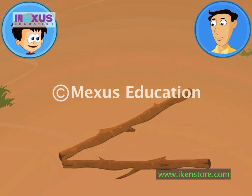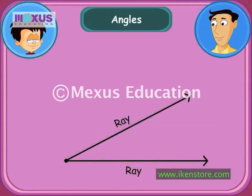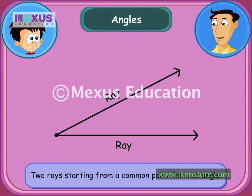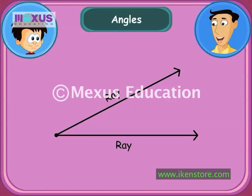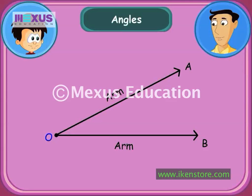Hey, so that's how we get an angle. You got it right, JC. Two rays starting from a common point form an angle. Let us name these two rays as OA and OB. The two rays are called the arms or sides of the angle. And the common point O is called the vertex of the angle.